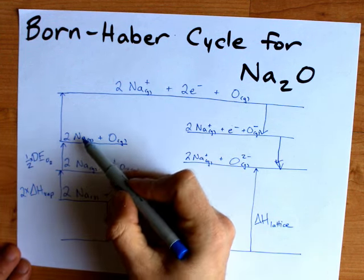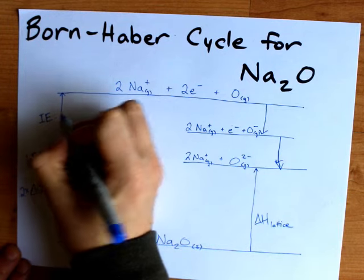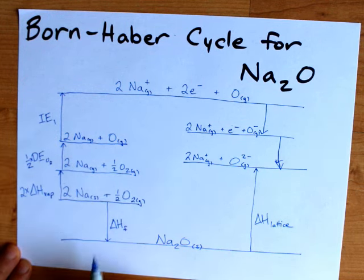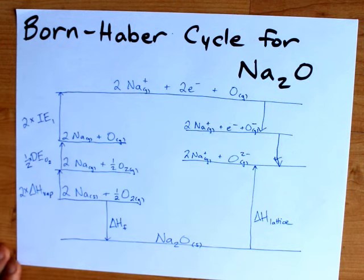Then I'm removing an electron from each of the sodium atoms. Removing an electron is an endothermic process. I call it ionization energy one of sodium. And again, because I'm doing it to two moles of it, I need to multiply it by two.